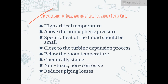Let's move on to the characteristics of ideal working fluid for the vapor power cycle. The desirable characteristics of the working fluid in a vapor power cycle, to obtain the best thermal efficiency, are given as follows. The fluid should have high critical temperature, so that the saturation pressure at the maximum permissible temperature, that is the metallurgical limit, is relatively low. It should have large enthalpy of vaporization at that pressure. The saturation pressure at the temperature of heat rejection should be above the atmospheric pressure, so as to avoid the necessity of maintaining vacuum in the condenser. The specific heat of the liquid should be small, so that little heat transfer is required to raise the liquid to the boiling point.